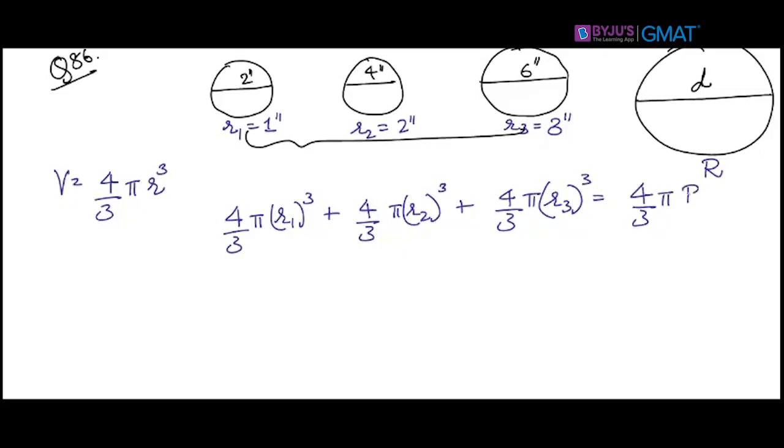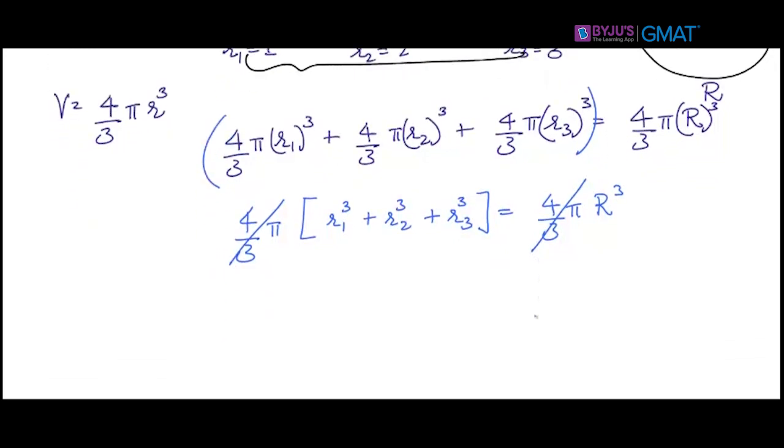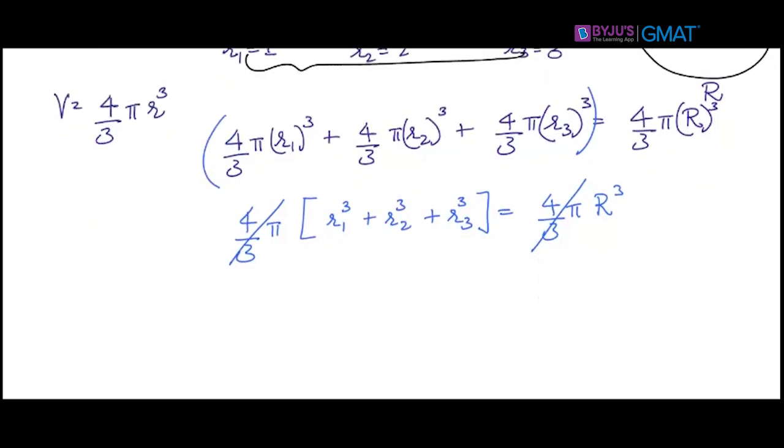That's why you should not solve a question until and unless it is absolutely required. So 4/3 π cancels out from both sides.